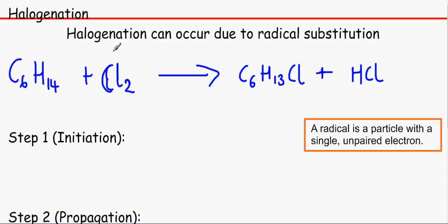Halogenation basically means when we try and add something from group 7, a halogen: Cl2 in this case, or iodine, or bromine, or fluorine. We can go through a process of halogenation to make this lovely compound over here, C6H13Cl, plus this inorganic compound, HCl.